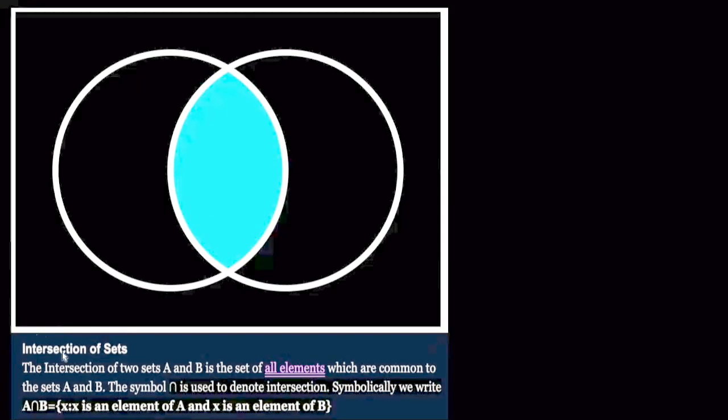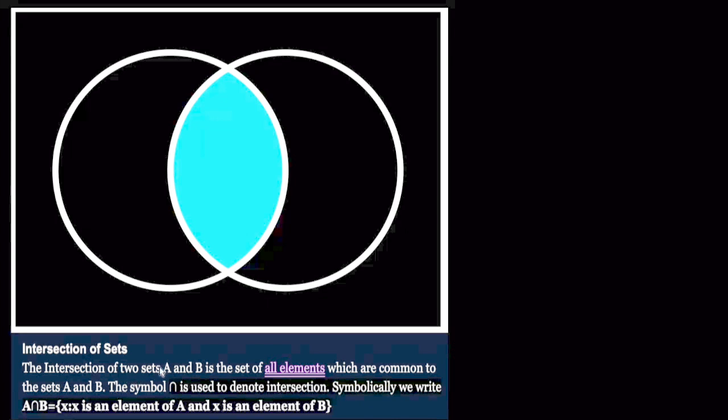Next is intersection of sets. The intersection of two sets A and B is the set of all elements which are common to the sets A and B.